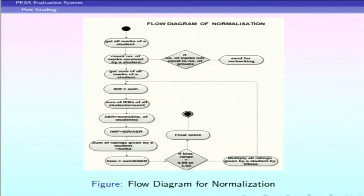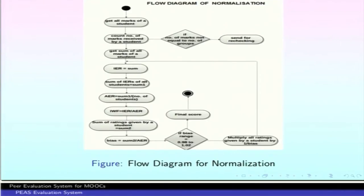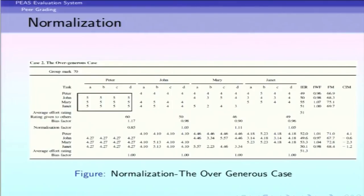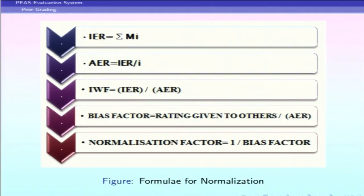The normalization process uses a sample grading table showing how peers have assigned marks. From this table, we calculate IER — Individual Effort Rating, which is the sum of scores you have given — and AER — Average Effort Rating, which is the average of all scores given across all peers.